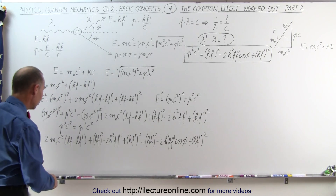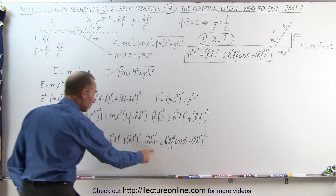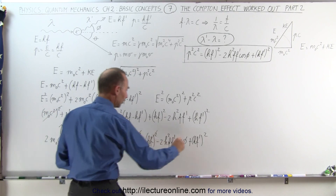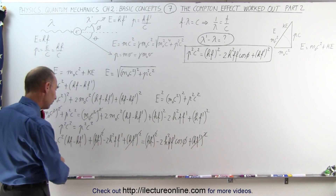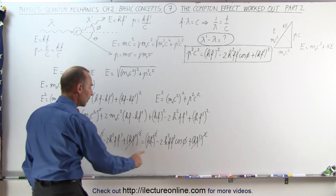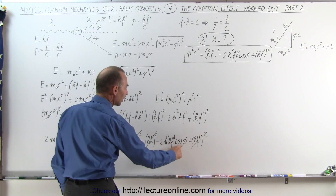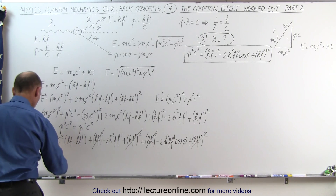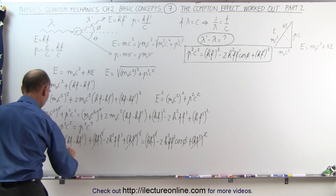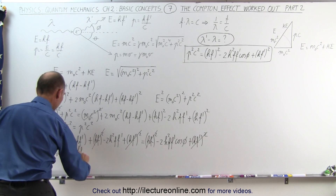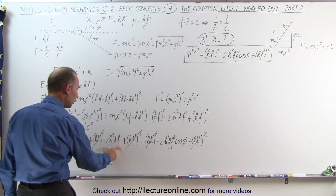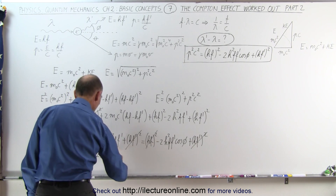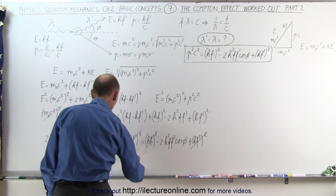We can simplify things further. Notice we have HF squared on the left side and HF squared on the right side — those cancel. We also have HF prime squared on both sides — those cancel too. On the left side we have minus 2H squared FF prime, and on the right side we have minus 2H squared FF prime times the cosine of phi. Moving terms across, we end up with 2M sub-naught C squared times HF minus HF prime equals 2H squared FF prime times the quantity 1 minus the cosine of phi.